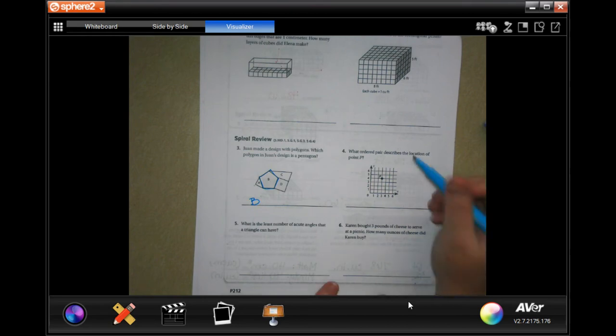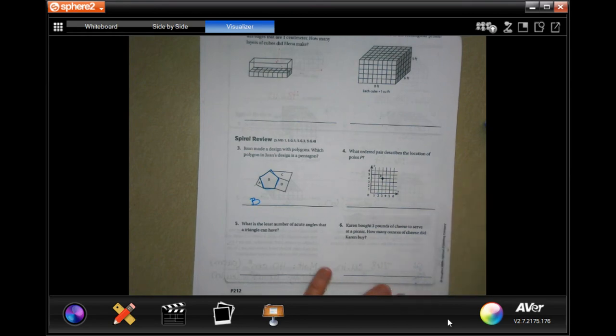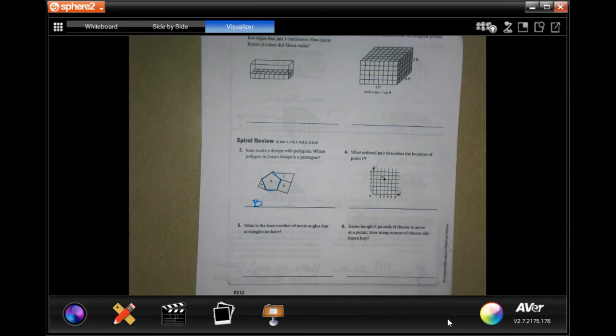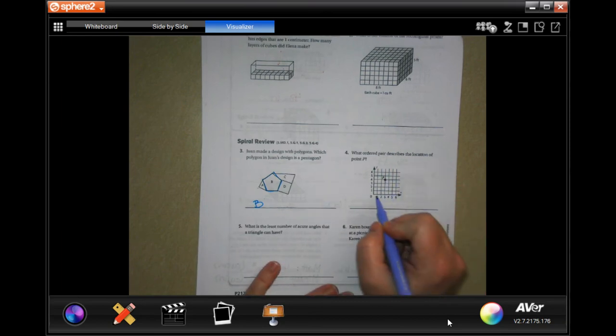Which ordered pair describes the location of point E? Over first, over 3, up 4. 3, 4. Done.